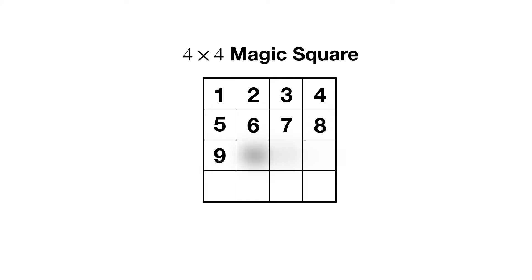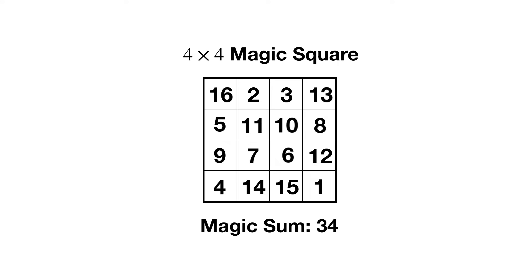Magic squares of even size are a bit harder to make, though the procedures aren't too complicated. Here's an example of how to construct a 4 by 4 magic square. The constructions get a little more complicated with magic squares of even size, so I will leave some relevant links down in the comments.